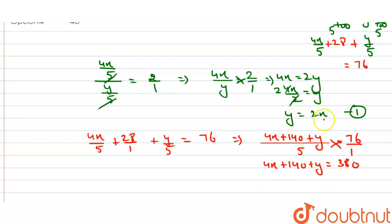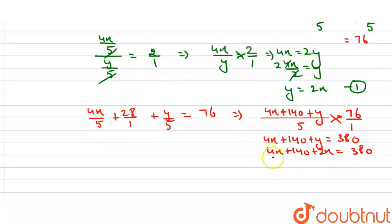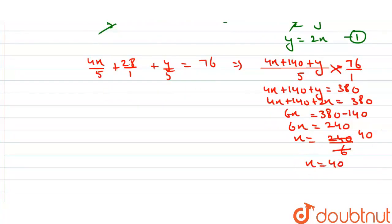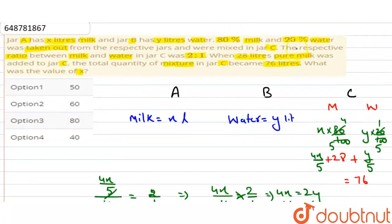Equation 1 سے y کی value put کر دیں گے: y = 2x. تو 4x plus 140 plus 2x is equal to 380. 4x اور 2x: 6x plus 140 = 380. 140 کو دوسری side لے جائیں: 6x = 380 minus 140 = 240. تو x کی value 240 divided by 6 = 40 آگئی ہمارے پاس۔